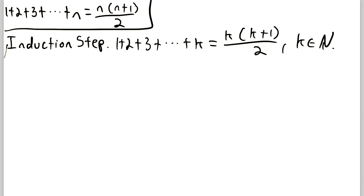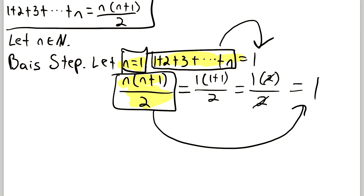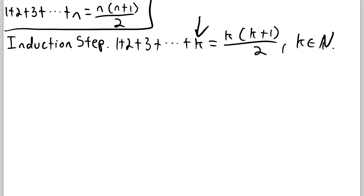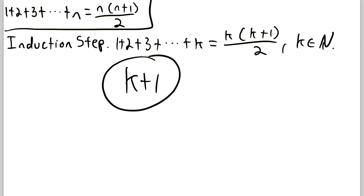Some people confuse the induction step with assuming the conclusion, but that's not what we're doing. In the basis step we already proved the proposition is true for n equals 1, so we know it's true for some value — in the induction step we just give that value a name, k. Then what we have to do is use this information to prove that the proposition is true for k+1. Let's write out the sum of our proposition up to k+1.